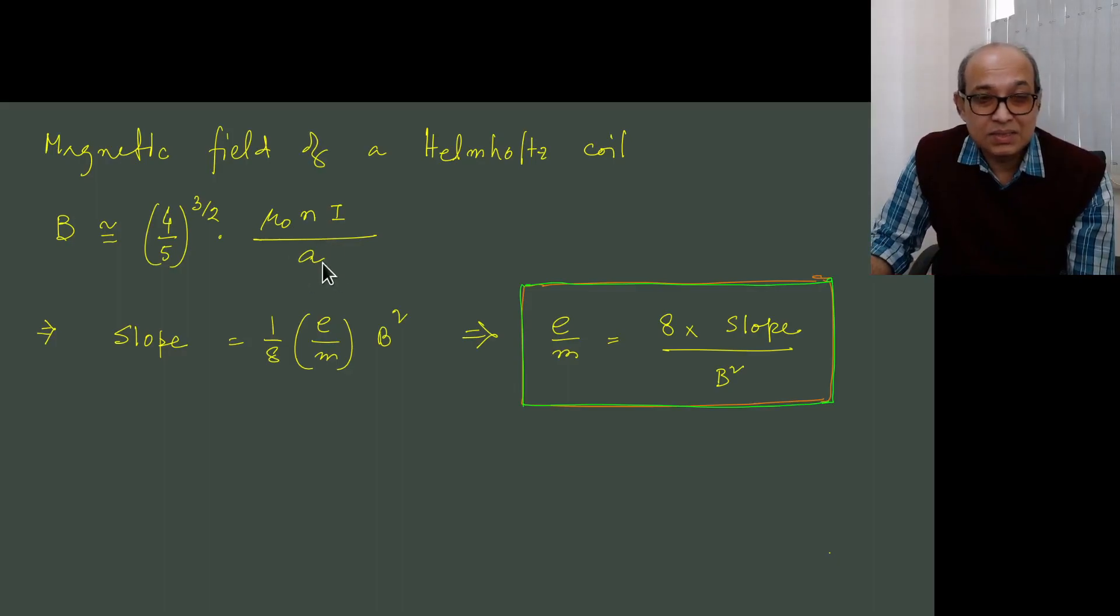And mu naught is constant of course. So this formula tells us approximately the magnetic field inside Helmholtz coil.